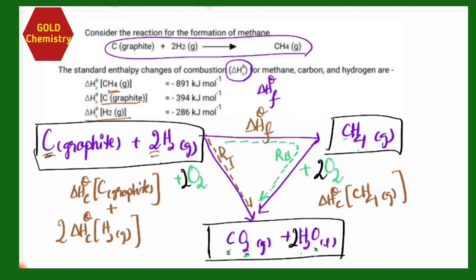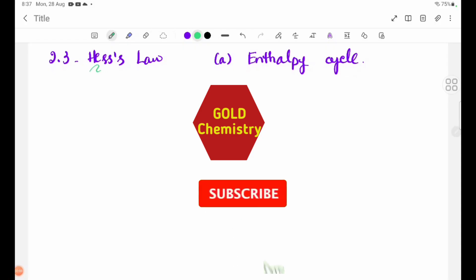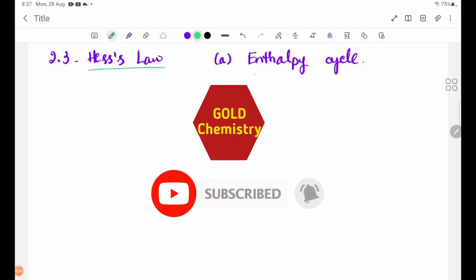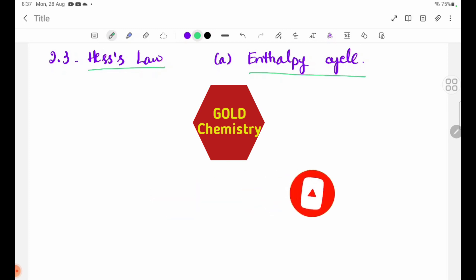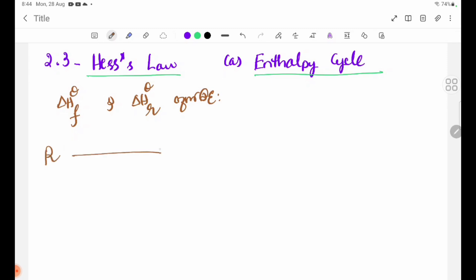How to construct an enthalpy cycle for calculating the enthalpy change of formation from enthalpy changes of combustion. We are going to use the standard enthalpy change of formation and the standard enthalpy change of reaction. This is called the standard enthalpy change of reaction from the compound and its elements.